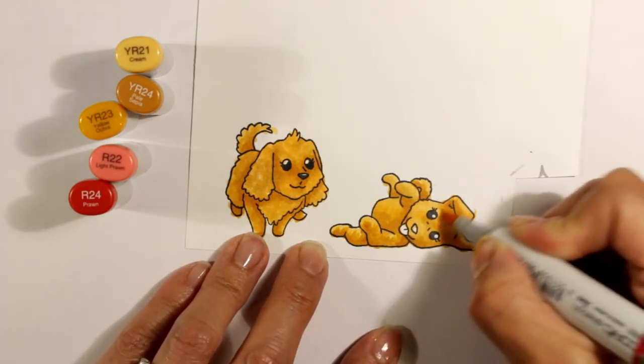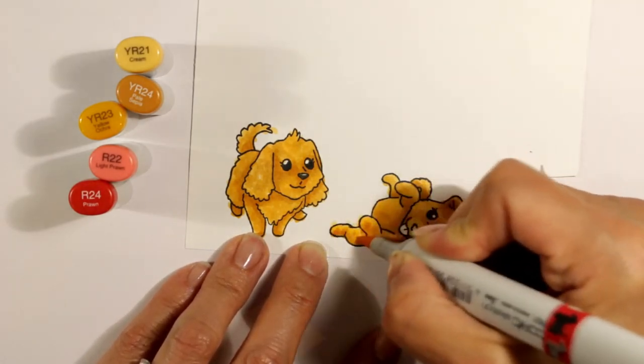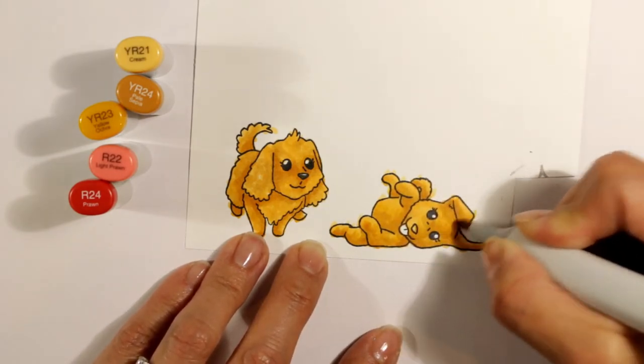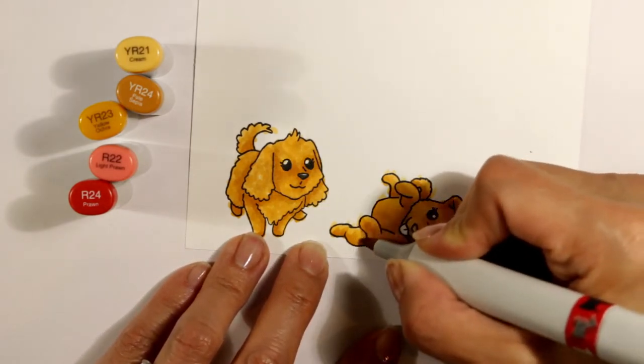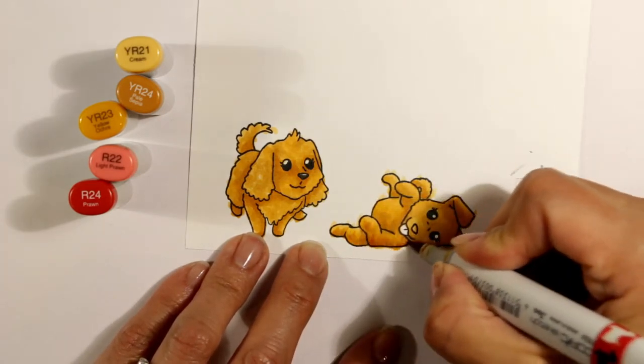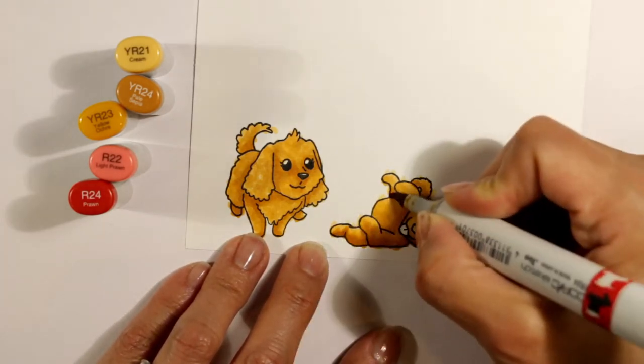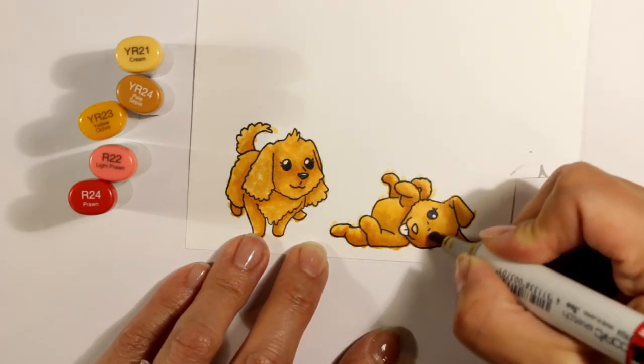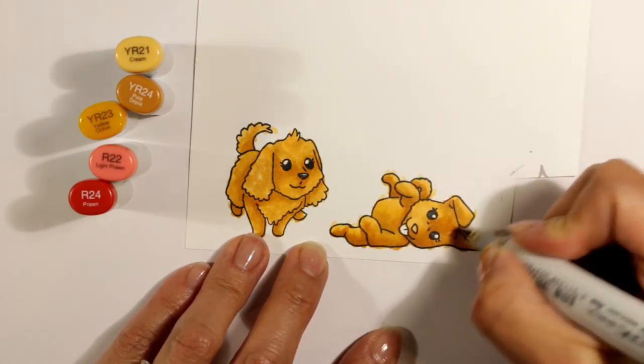I'm going back in and putting in those darker shades again on the lower parts of each segment of the body. I'm not too worried about staying inside the lines because I know I'm going to be fussy cutting all of these images out.